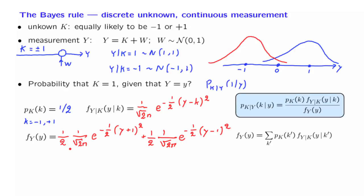Once more, this expression here corresponds to this normal with a mean of minus 1. This expression here corresponds to a normal with a mean of plus 1, which is this graph here. So at this point, we have in our hands expressions for everything that is involved here.